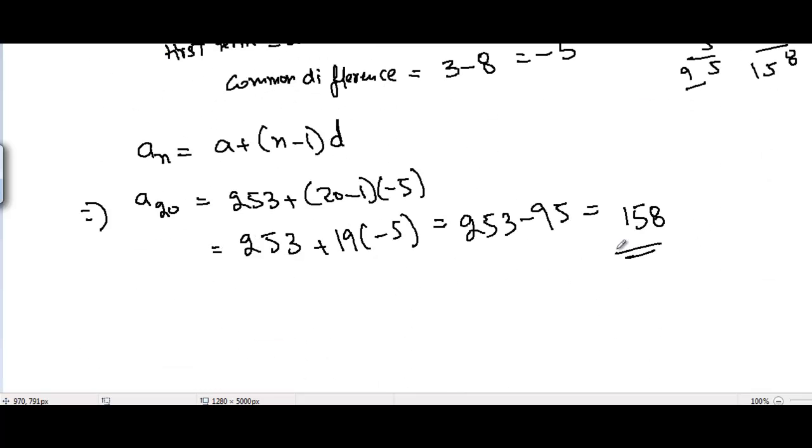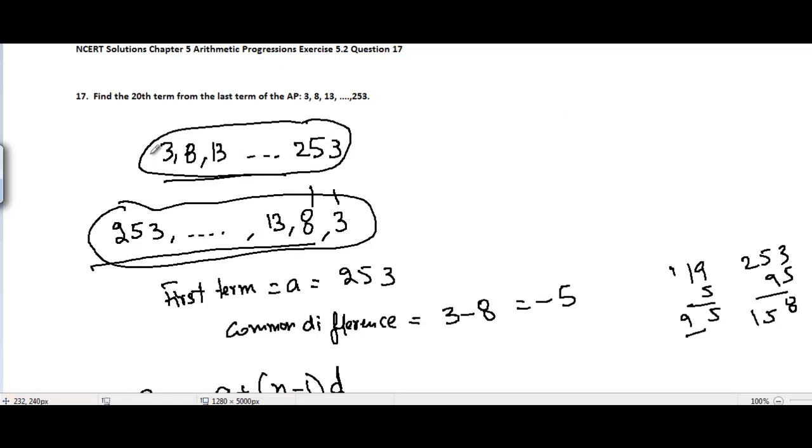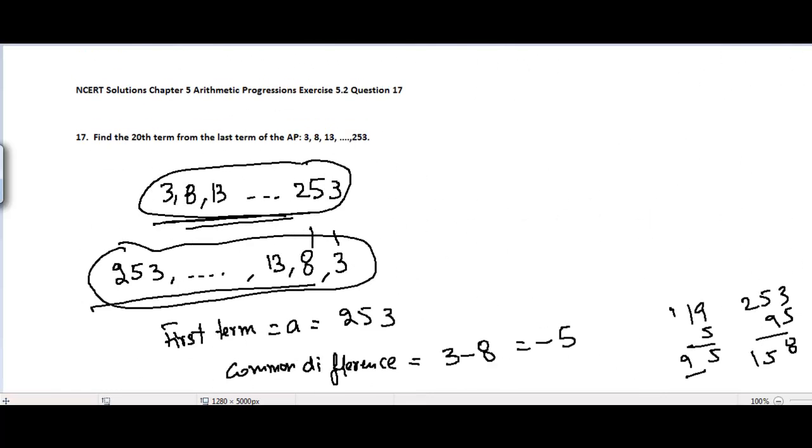So that's the solution. The 20th term is equal to 158, which is the 20th term from the last term of this AP. In the next video, I'll be covering Chapter 5 Arithmetic Progressions Exercise 5.2 Problem number 18. See you guys.